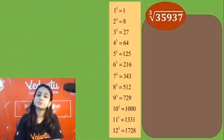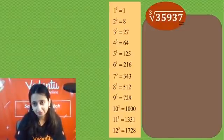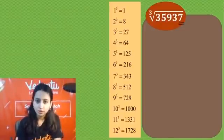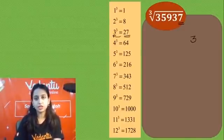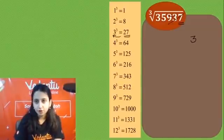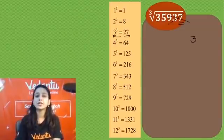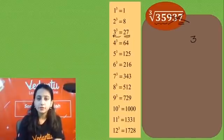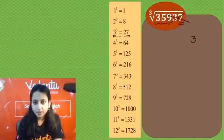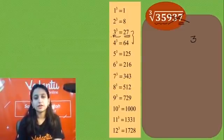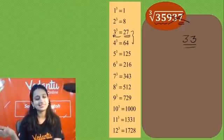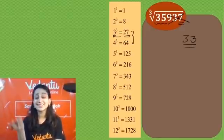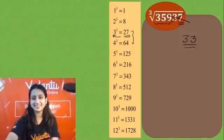One more question! Again, ones place has 7 — corresponding number is 3. Discard 3 digits, left with 35. Check where 35 lies: it's between 27 and 64, i.e., between 3³ and 4³. Take the smaller: 3. So 33 is the answer! Kitna easy hai — easy peasy lemon squeezy!